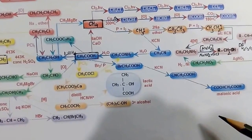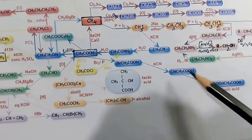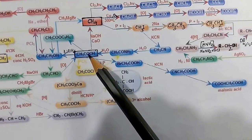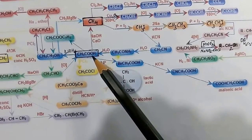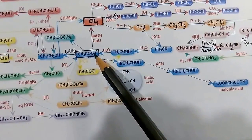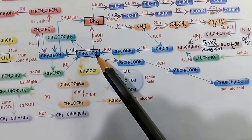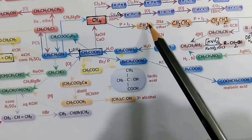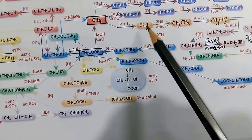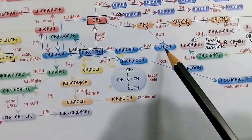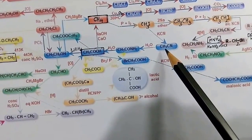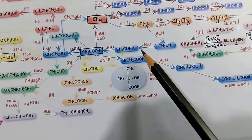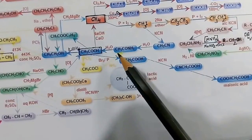Acetic acid can also be obtained from acetamide. Methyl iodide treated with KCN gives methyl cyanide. Methyl cyanide undergoes hydrolysis, forming acetamide, which further gives acetic acid.